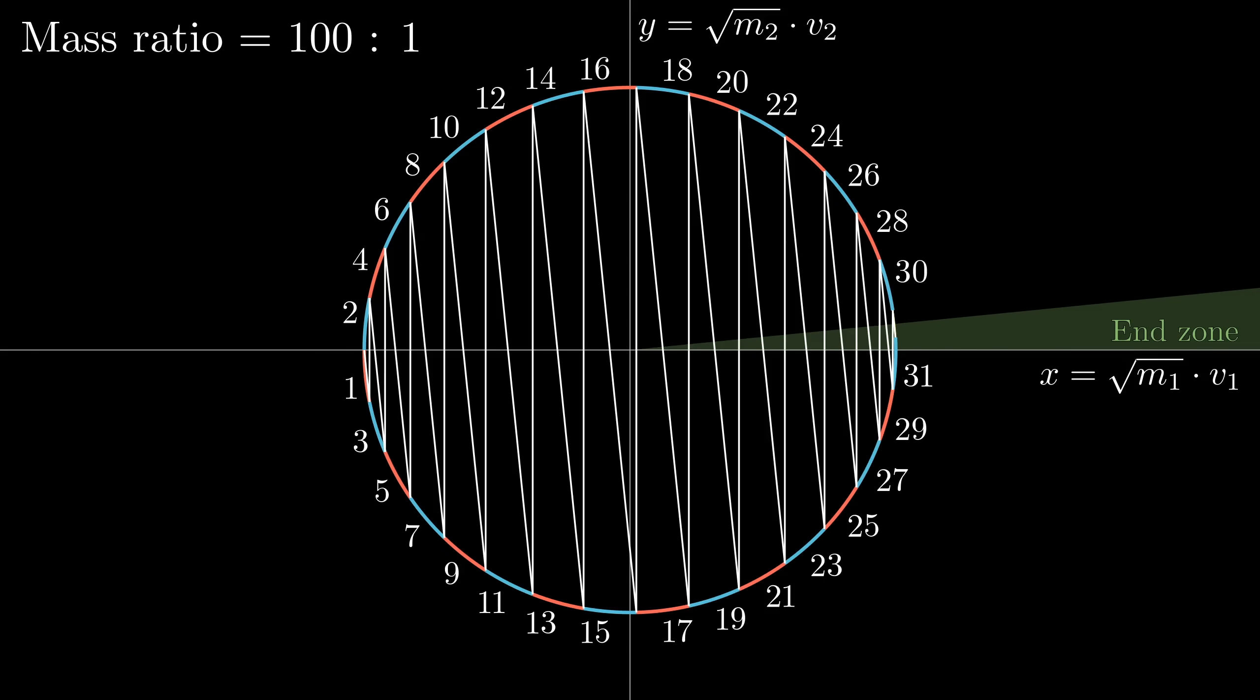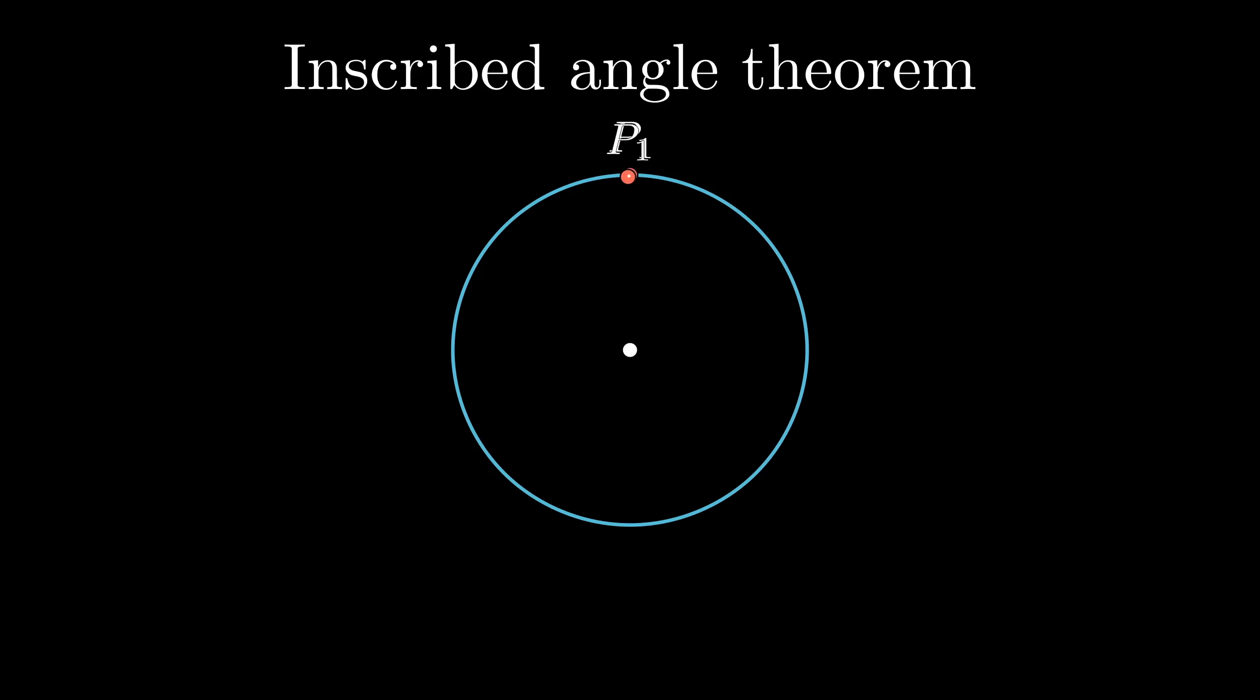The key here is to use the ever-helpful Inscribed Angle Theorem, which says that whenever you're forming an angle using three points on a circle, p1, p2, and p3, like this, it will be exactly half of the angle formed by p1, the circle's center, and p3. p2 can be anywhere on the circle, anywhere except between p1 and p3, and this lovely little fact will be true.